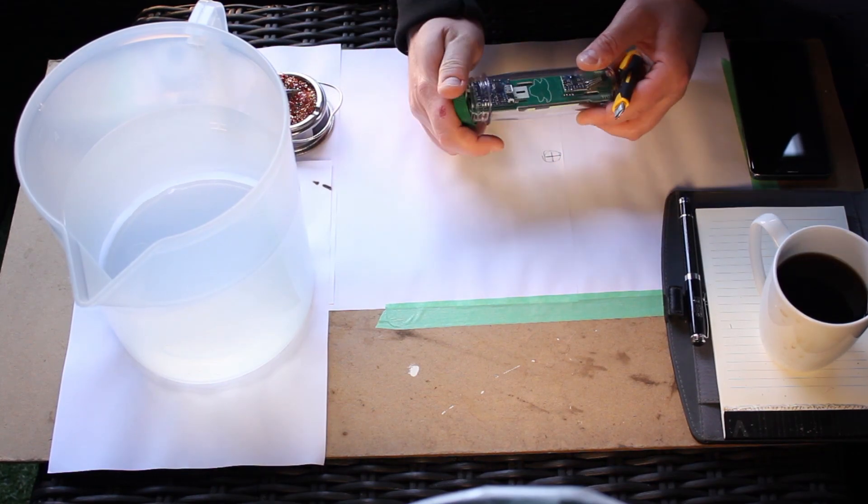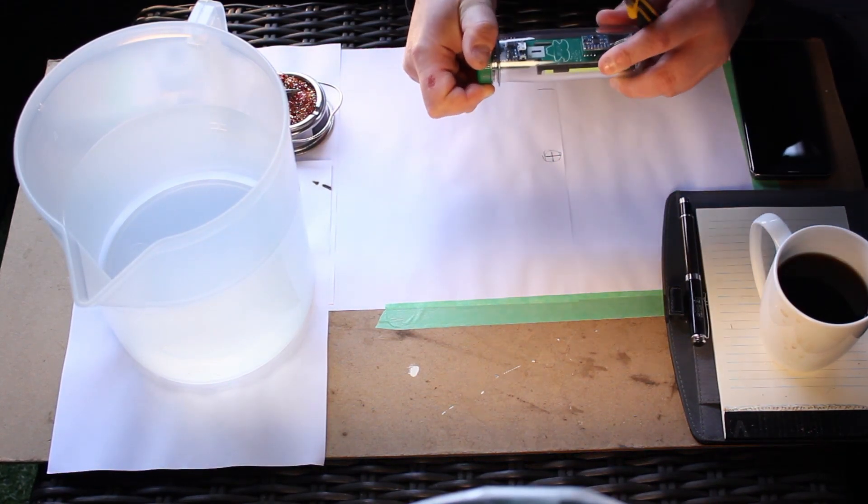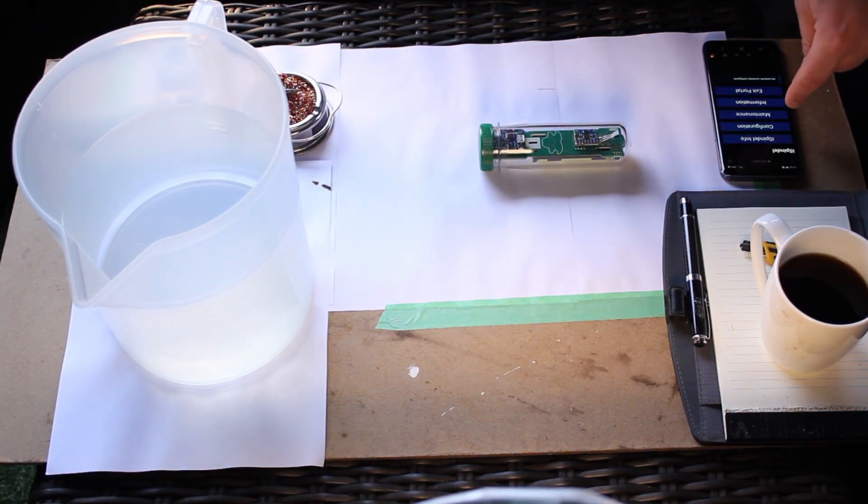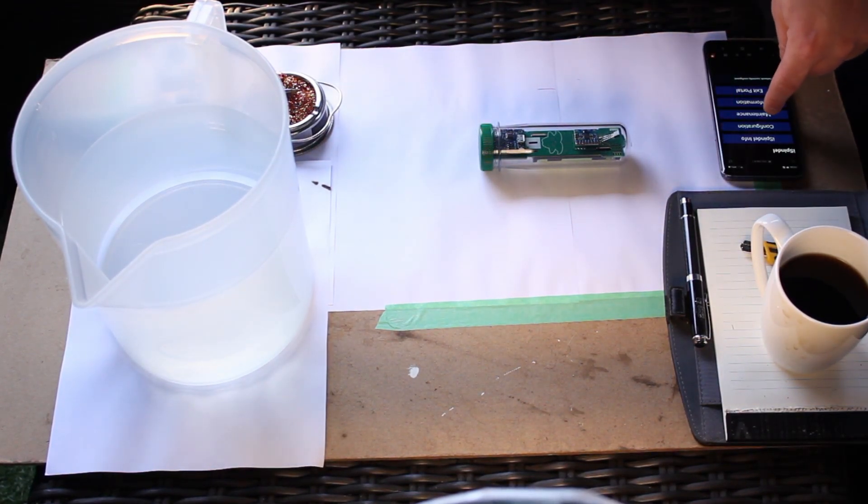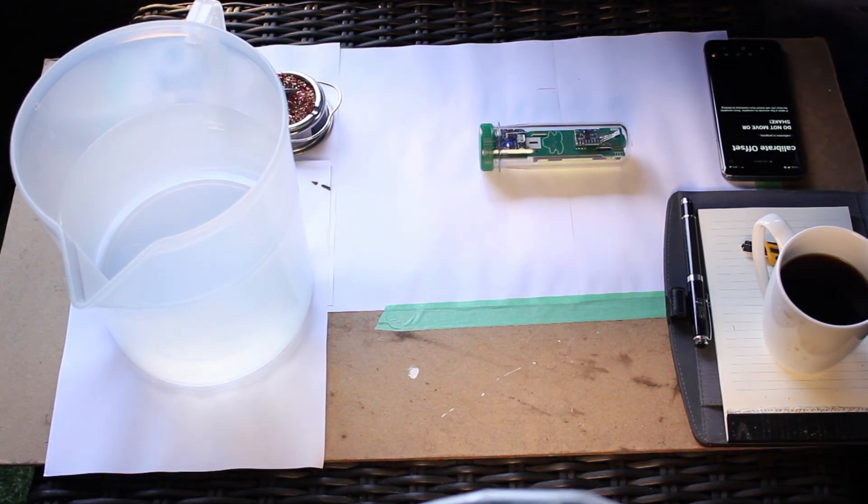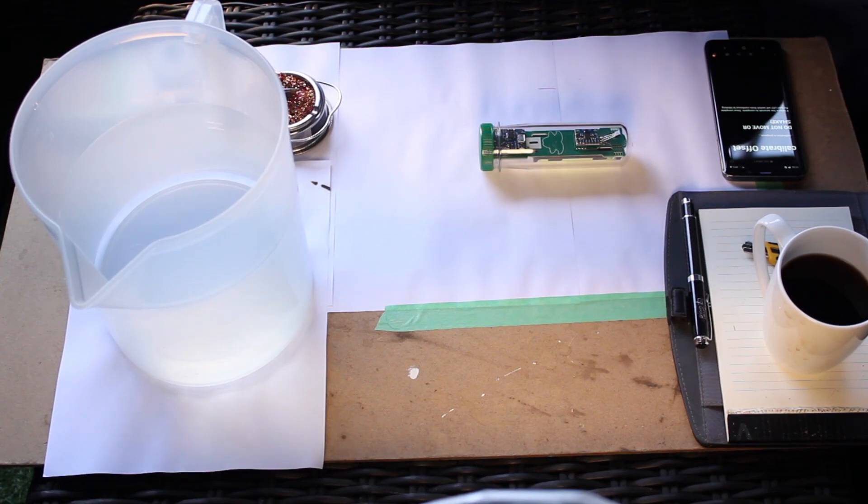My calibration process is going to go a little something like this. First, I'm going to find a perfectly level surface. Next up, I'm going to do an offset calibration. If you don't know how to do this, I'll leave a card in the corner and a link in the description down below.